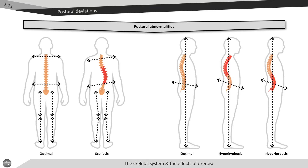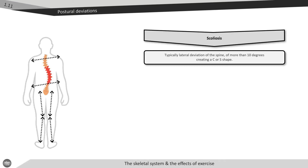The image shows the visual difference between optimum posture and some common postural deviations in both the anterior-posterior and the lateral viewpoints, including scoliosis, hyperkyphosis, and hyperlordosis. We'll take a look at these three deviations in more detail in the following slides.